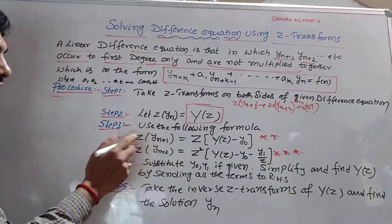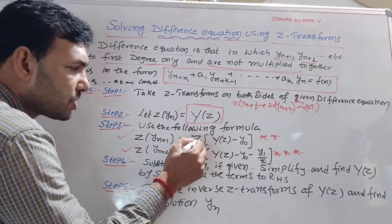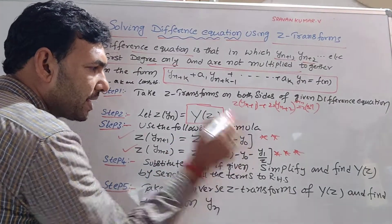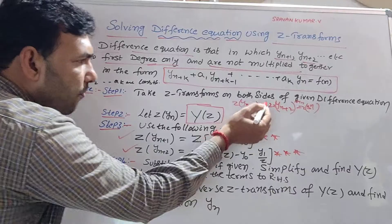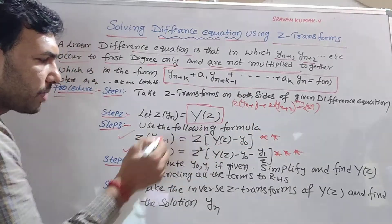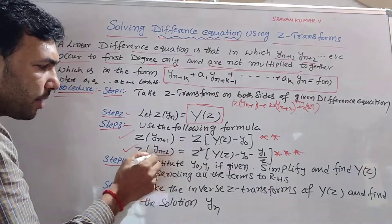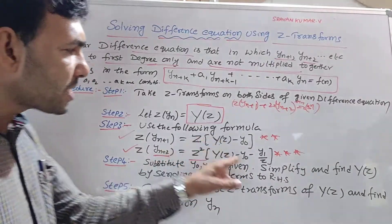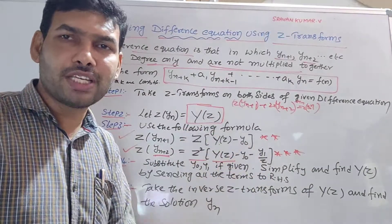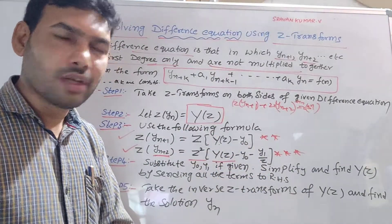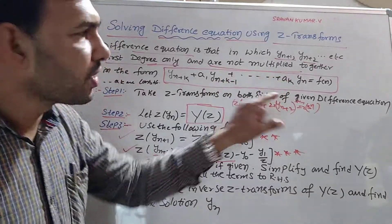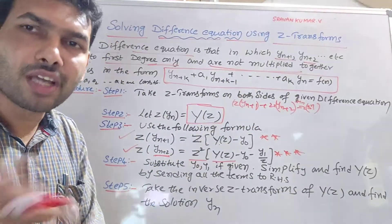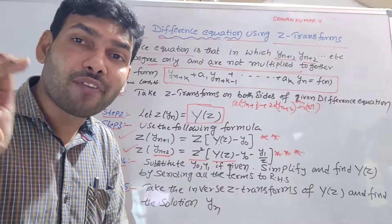Very importantly: Z of yn+1 equals Z into capital Y(Z) minus y0. And Z of yn+2 means Z squared into capital Y(Z) minus y0 minus y1 divided by Z. So we substitute here. Z of yn is capital Y(Z), and then we substitute Y0 and Y1 values.